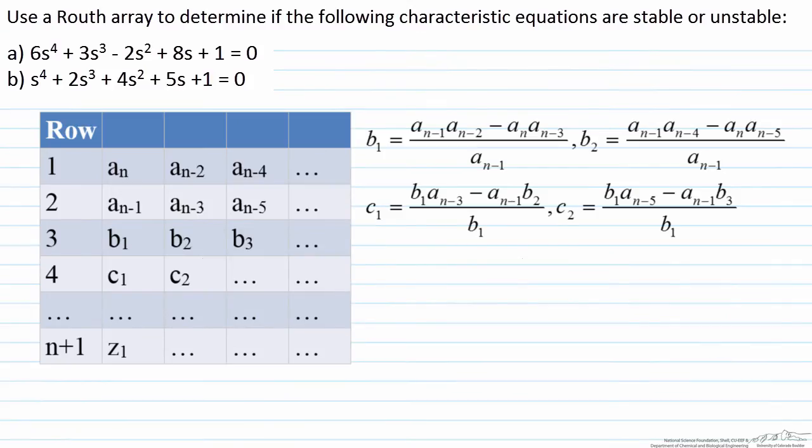If we look at part a, what we can immediately see is without doing any of the Routh array analysis we see that we have a negative value for one of our coefficients. Therefore that automatically means that our process is unstable without doing any other calculations.